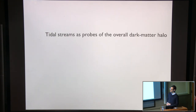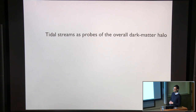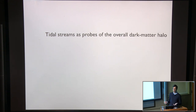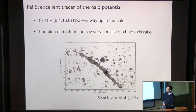The technical part of the talk is largely done. Streams are simple, beautiful dynamical objects that we can build very simple models for — and therefore they're very good for learning about dark matter. There are very little systematics because we really understand the gravitational dynamics so well. Let's now use them to learn about the overall potential.